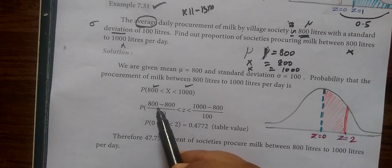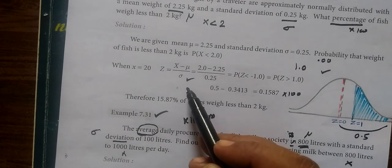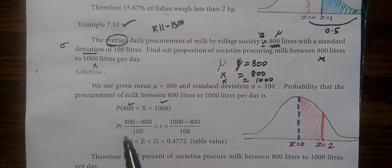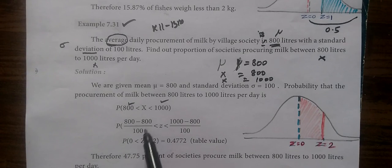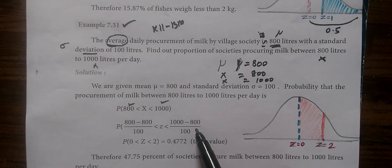The formula is x minus mu by sigma. So x is 800, sigma is 100, so totally 0. Then x is 1000, 1000 minus 800, by 100. 200 over 100.